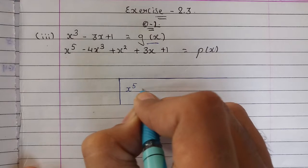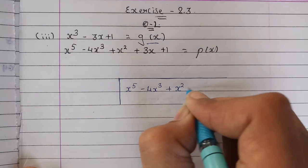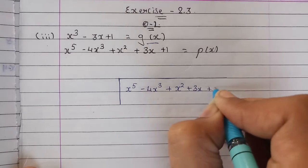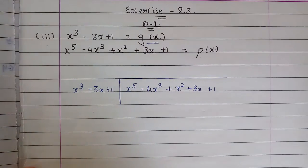x⁵ - 4x³ + x² + 3x + 1, we need to divide this by x³ - 3x + 1.